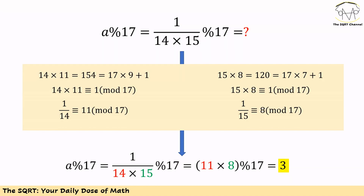We use a new trick here. We know 14 times 11 is 154, and 154 mod 17 is 1, so the modular inverse of 14 mod 17 is 11. Similarly, 15 times 8 is 120, and 120 mod 17 is 1, so the modular inverse of 15 mod 17 is 8. Therefore 1 over 14 times 15 in mod 17 is equivalent to 11 times 8.